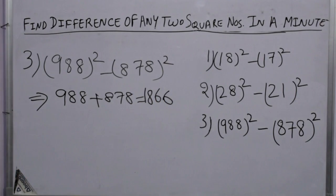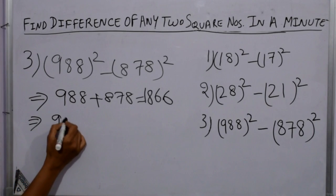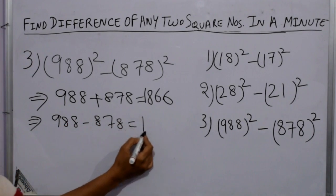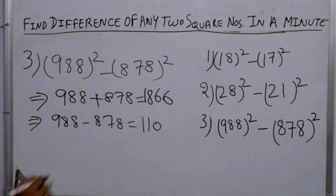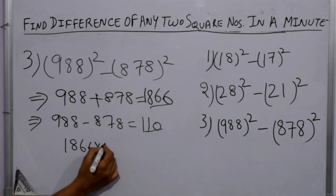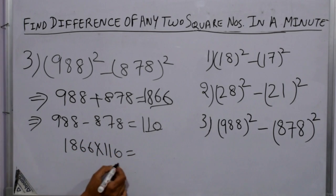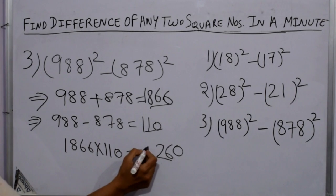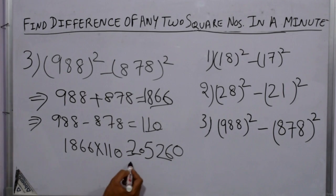We got 1866. Now subtract both the digits, we got 110. Now multiplying both these numbers, 1866 and 110, we got 205260. This is the answer.